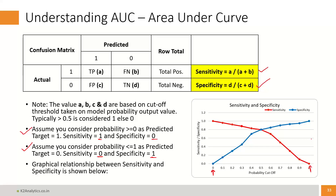I can keep changing the cutoff — if probability above 0.1 then 1 else 0, if above 0.2 then 1 else 0, and so on. As I keep changing the cutoff, sensitivity and specificity keep changing. How this change in sensitivity and specificity is used to create a plot called the Area Under Curve is what we see in the next slide.